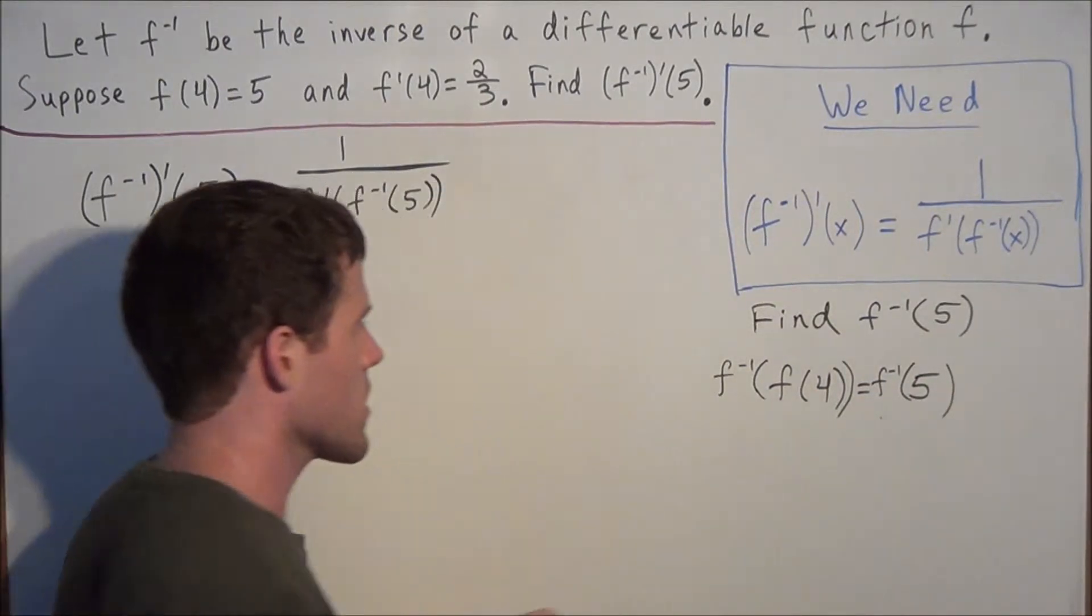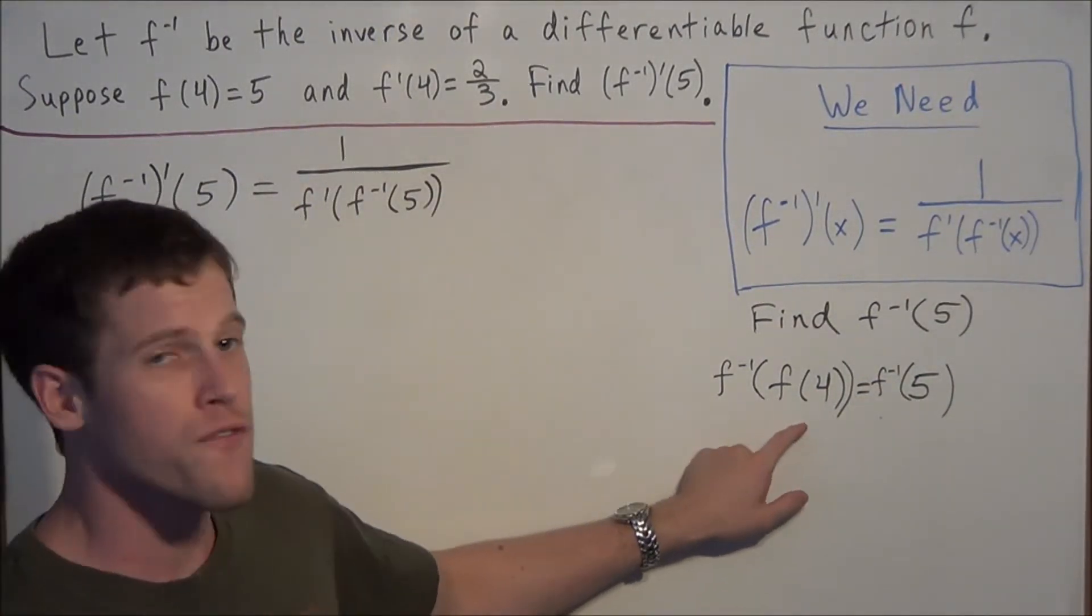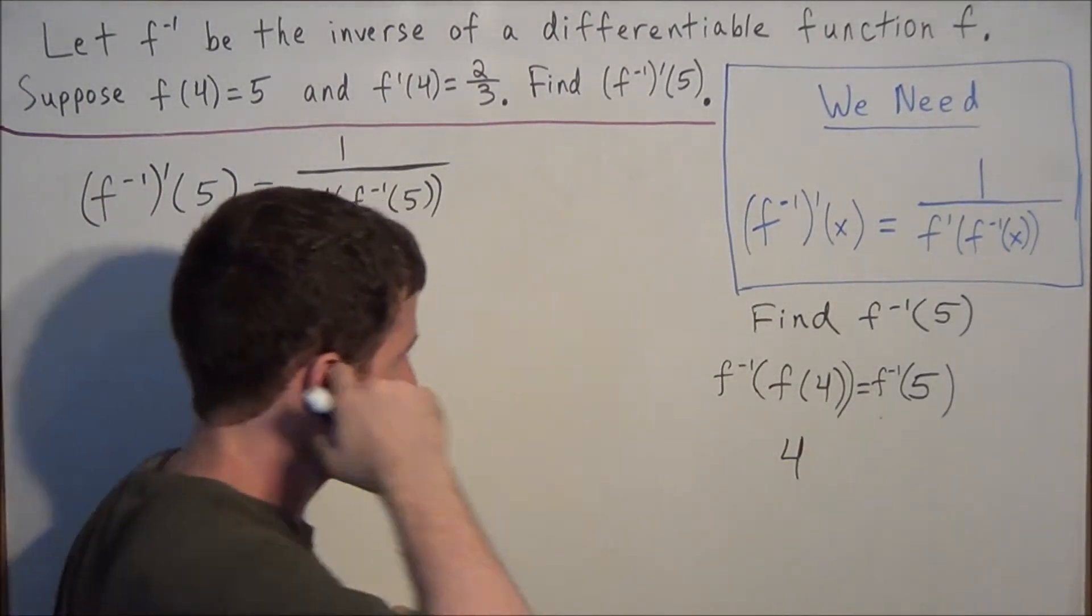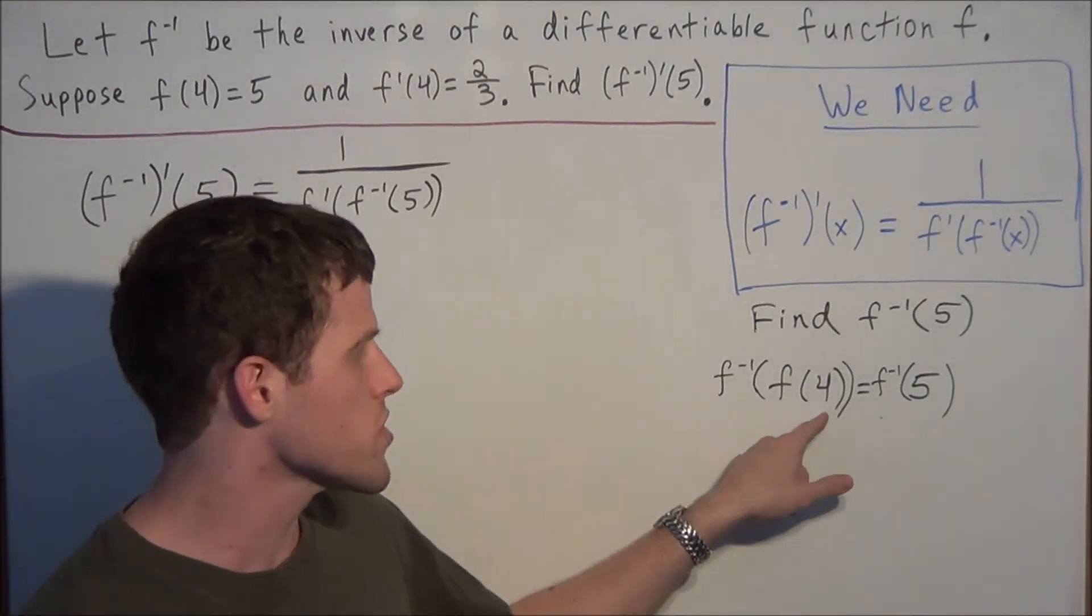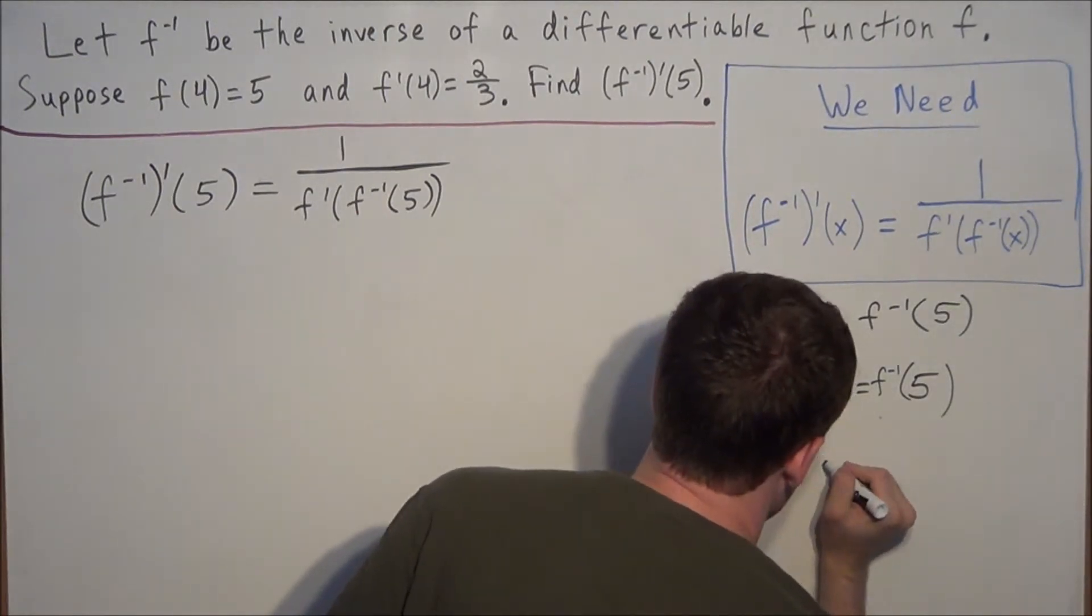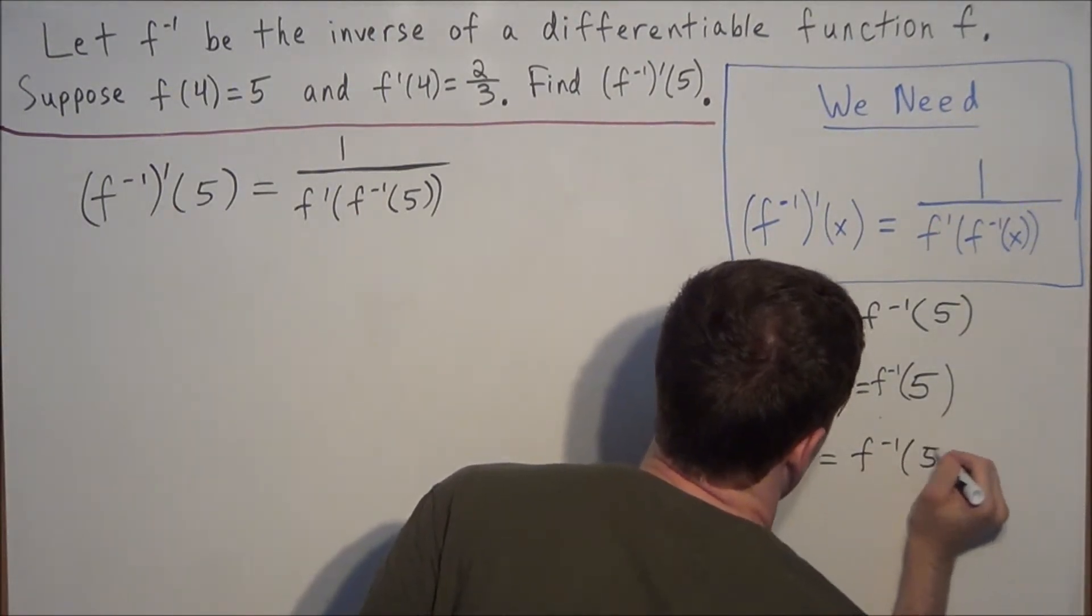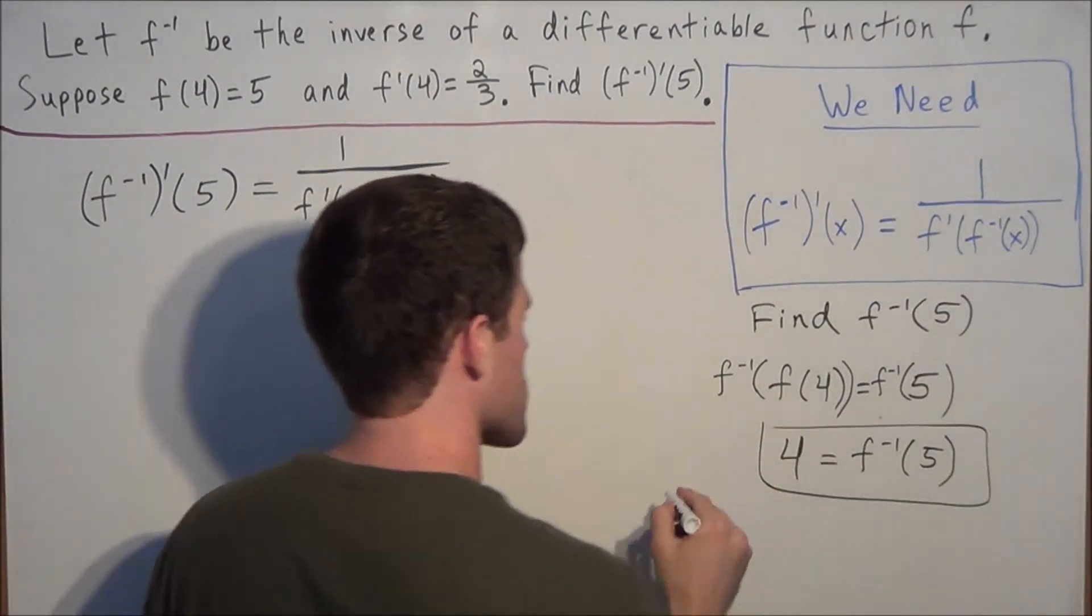We'll notice on the left-hand side that f inverse of f of 4 is simply equal to 4. By definition, if we plug a function into its inverse, we're going to generate the original input value, in this case 4. So we have that 4 is equal to f inverse of 5, and this information is important for solving this problem.